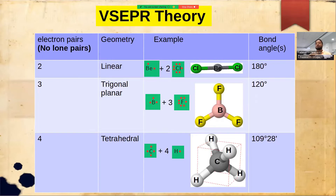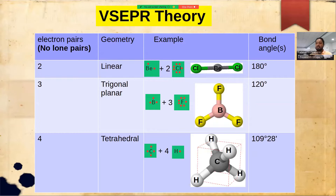When we have four electron pairs, the geometry is tetrahedral and the bond angle is 109 degrees 28 minutes. As an example, consider methane (CH₄). Carbon has four electrons in its valence shell with the configuration 2s², 2p², giving four valence electrons, which are shared with four hydrogen atoms. The resulting structure is a tetrahedral structure with the four hydrogens pointing toward the four corners of a tetrahedron, as you can see from the image. This is not a planar structure — carbon and two hydrogens lie in one plane, one hydrogen comes forward and the other goes backward.